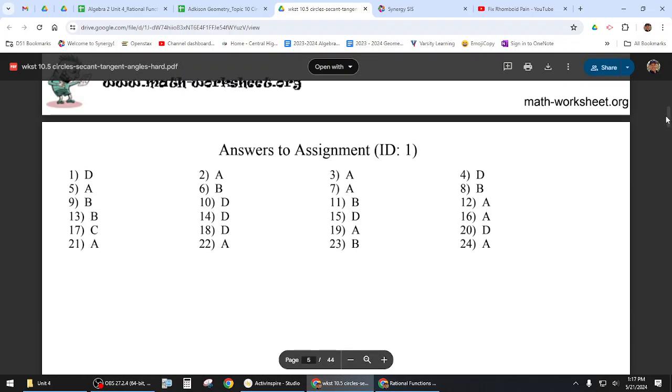Number one, again, D, it's shown here. But D is actually double what it should be. It should be 78. Number three, A. Five, A. Seven, A. Nine is B. Eleven is B. Thirteen is B. So a lot of A's and B's.